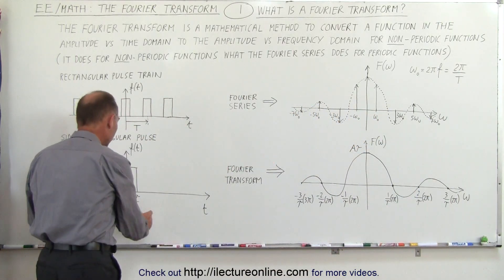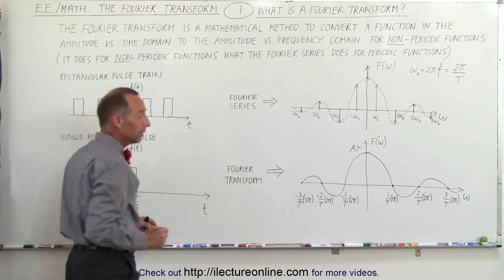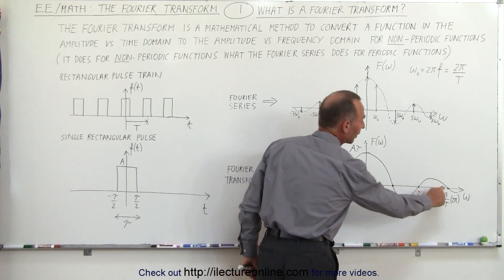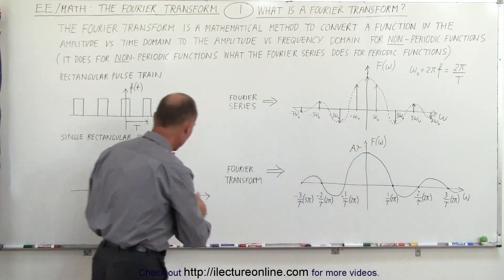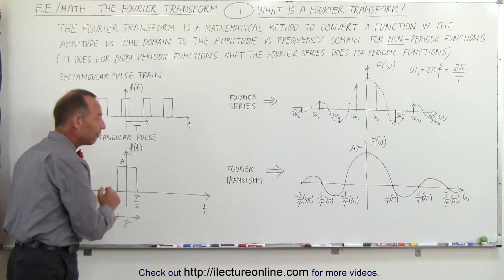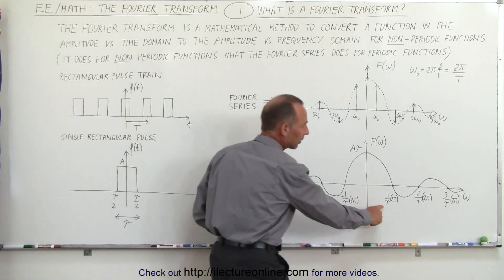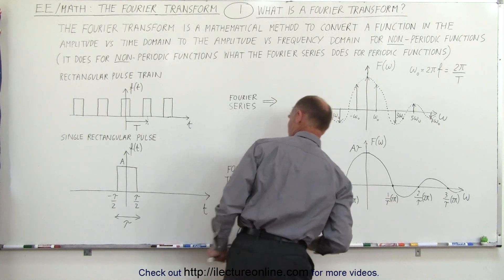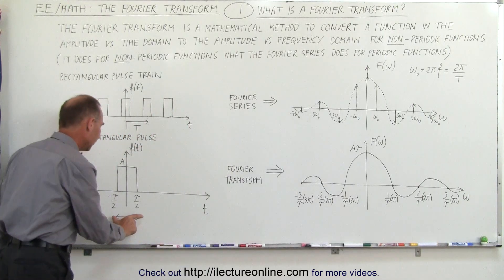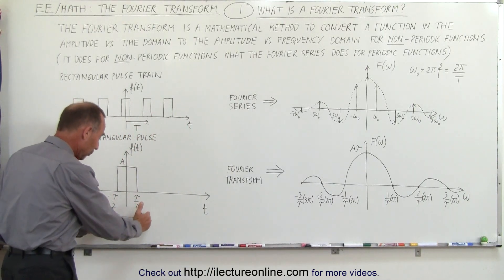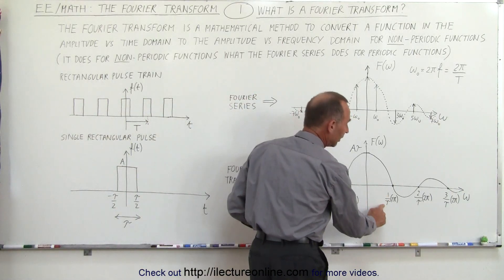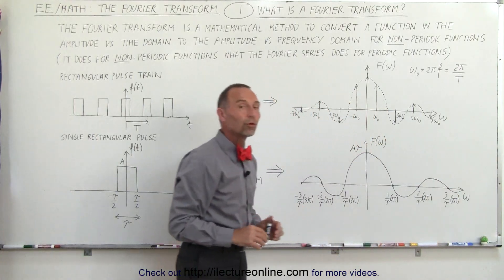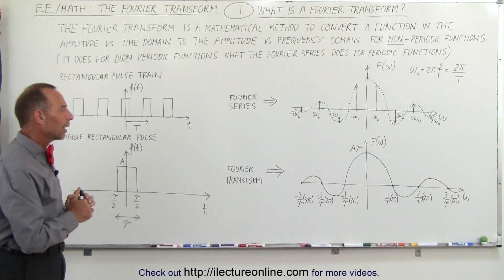If tau equals four seconds — a wider pulse — then one over four times two pi gives crossings at half pi, pi, three-halves pi, and so forth. If we narrow the pulse so that tau is only one second, then one over one times two pi means the function crosses at two pi, four pi, six pi, and so forth. You can get a feel for how the pulse width affects where the Fourier transform crosses the horizontal axis.